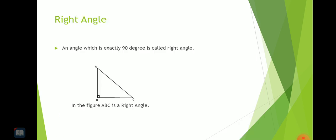Right angle. In the figure, you can see that ABC, that means B is a right angle.